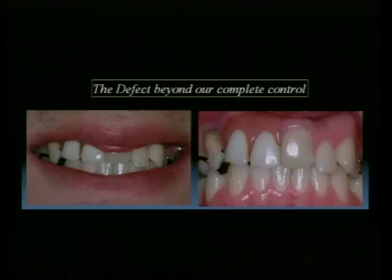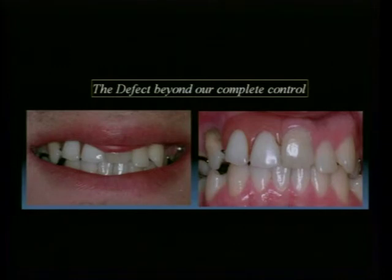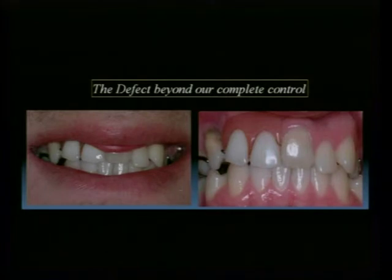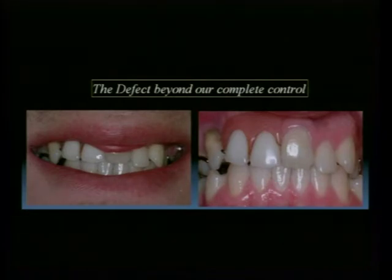I'll finish with a defect that I believe is hard to manage without pink porcelain. Most of us have heard Dr. Salama talk about planning for pink porcelain. I have taken from that approach — on defects like this we plan from the onset with the restorative dentist, with the dental laboratory, and most certainly with the patient for pink porcelain instead of oversized teeth or an island prosthesis.